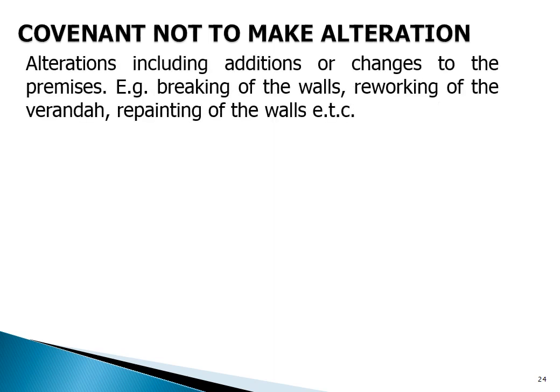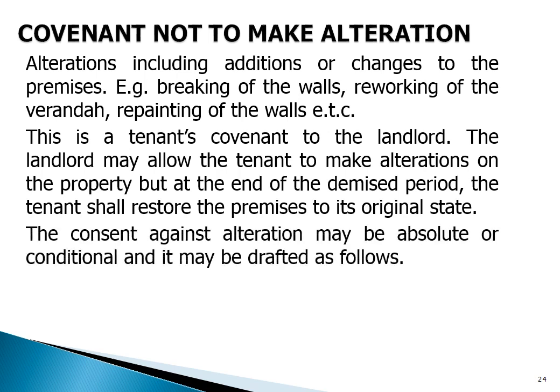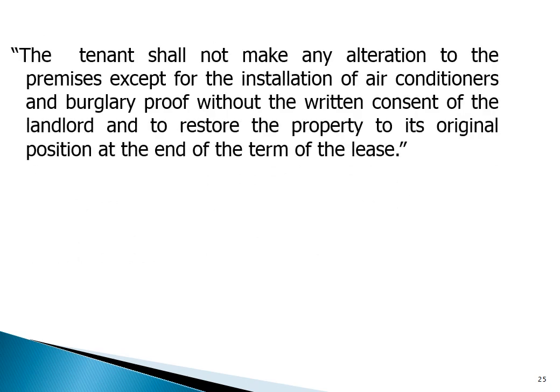Covenant not to make alterations: alterations include additions or changes to the premises, e.g., breaking of walls, rocking of the veranda, repainting of walls, etc. This is a tenant covenant to the landlord. The landlord may allow the tenant to make alterations on the property, but at the end of the demise period the tenant shall restore the premises to its original state. The consent against alteration may be absolute or conditional and may be drafted as follows: 'the tenant shall not make any alteration to the premises except for the installation of air conditioners and burglar-proof, without the written consent of the landlord, and to restore the property to its original position at the end of the term of the lease.'